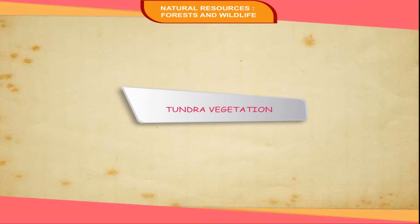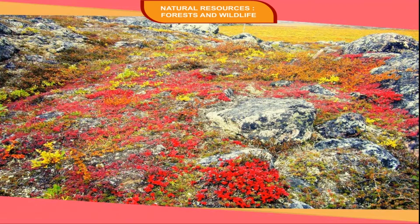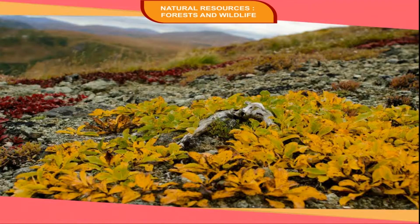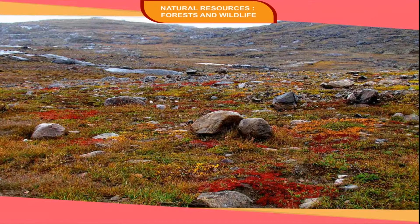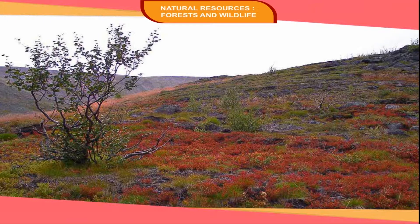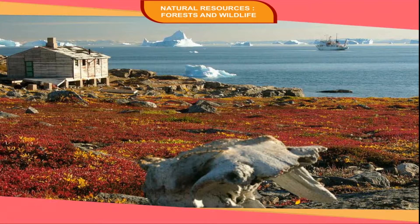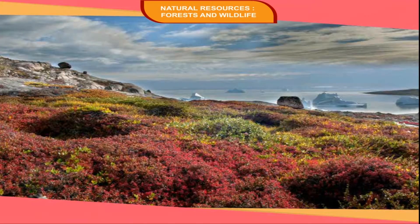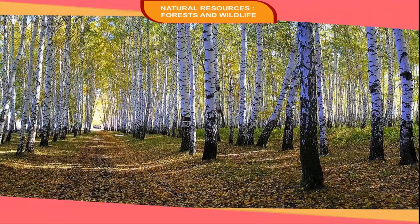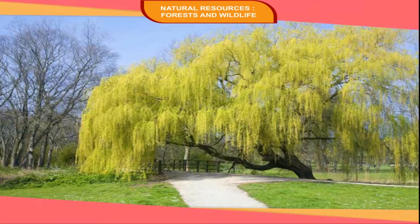Tundra Vegetation is found north of the Arctic Circle and in the high altitudes of the northern hemisphere. The heavy snow cover does not encourage plant growth. The vegetation consists of mosses, lichens, and sedges. In the southern part, some low shrubs grow in the summer season. The main species of plants are birches, junipers, and willow trees.